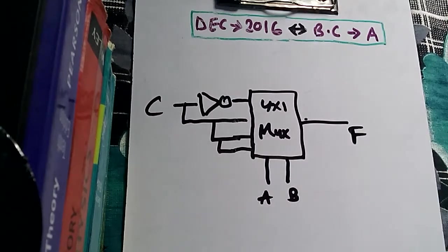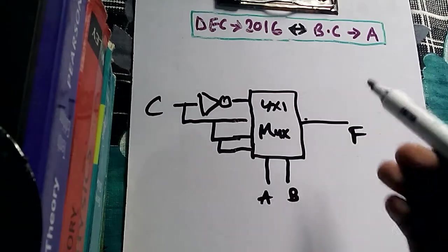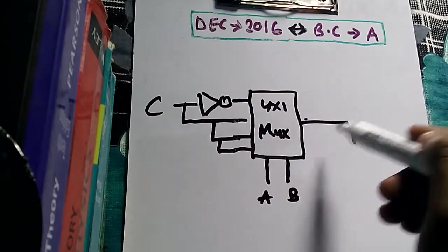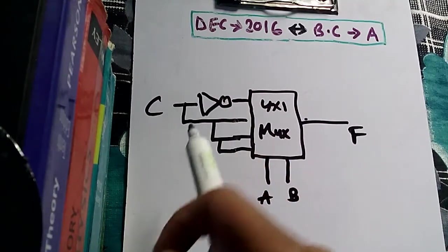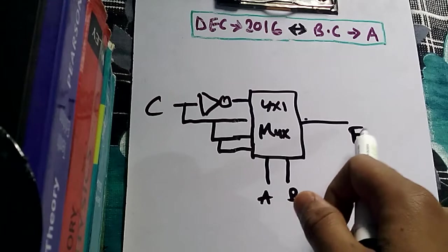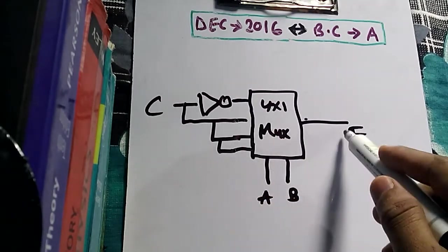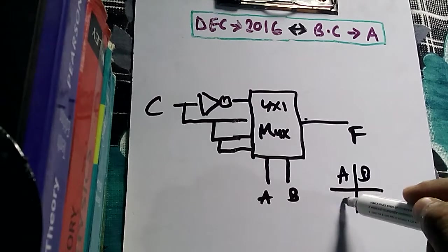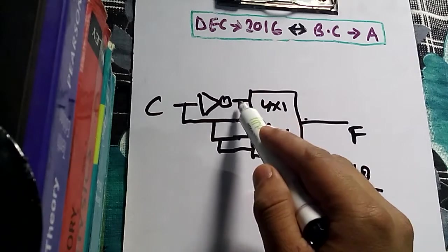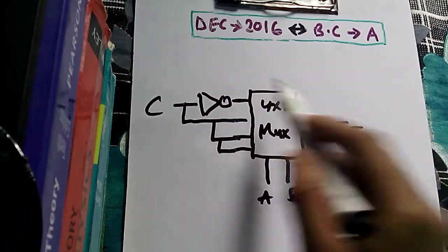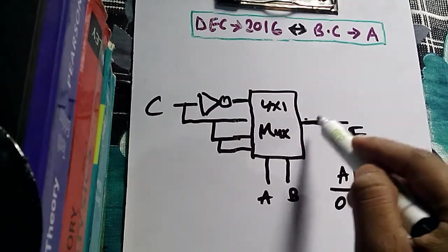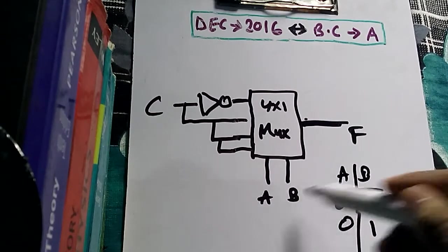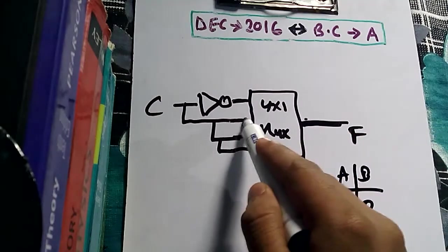A and B are the select lines of the multiplexer. A multiplexer has more than one input and only one output. It accepts data from one of the inputs and passes it to the output. Which input line connects to the output depends on the select lines. If you provide A and B the value 00, that causes the first line to pass to the output.